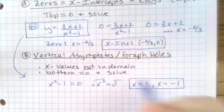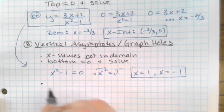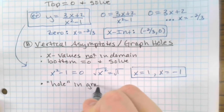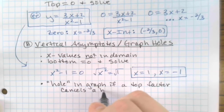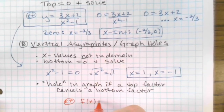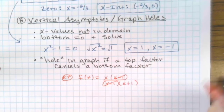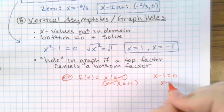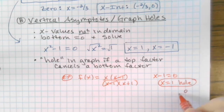This graph has no holes, but let's talk about holes. You get a hole in the graph if a top factor cancels a bottom factor. For example: f of x equals x times x minus 1 over x minus 1 times x plus 1. Because the x minus ones match, they cancel out. But you need to set x minus 1 equal to zero, and you get x equals 1 as the hole — basically just a gap in the graph.